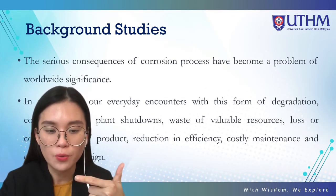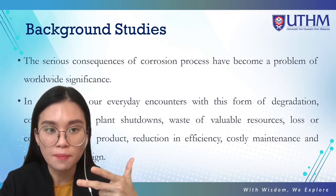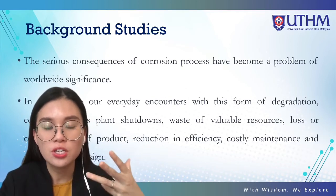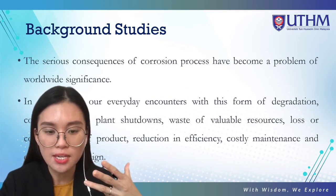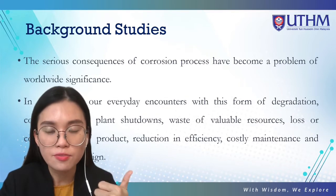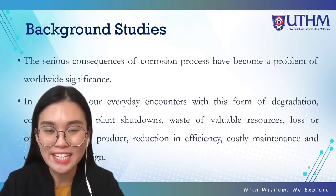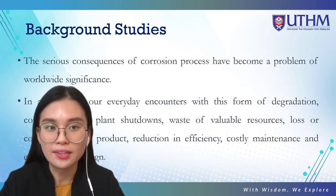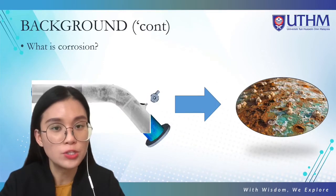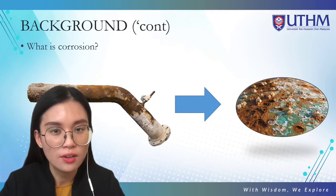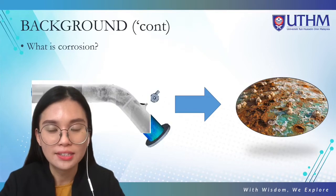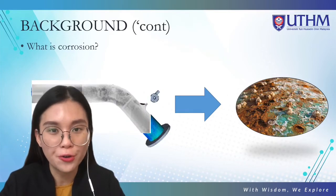Corrosion causes plant shutdown, waste of renewable resources, loss or contamination of product, reduction in efficiency, costly maintenance, and expensive over-design. As you can see in the picture, this is a bending pipe. From visual inspection, we can see there is a corroded part, which means the pipe is already corroded.